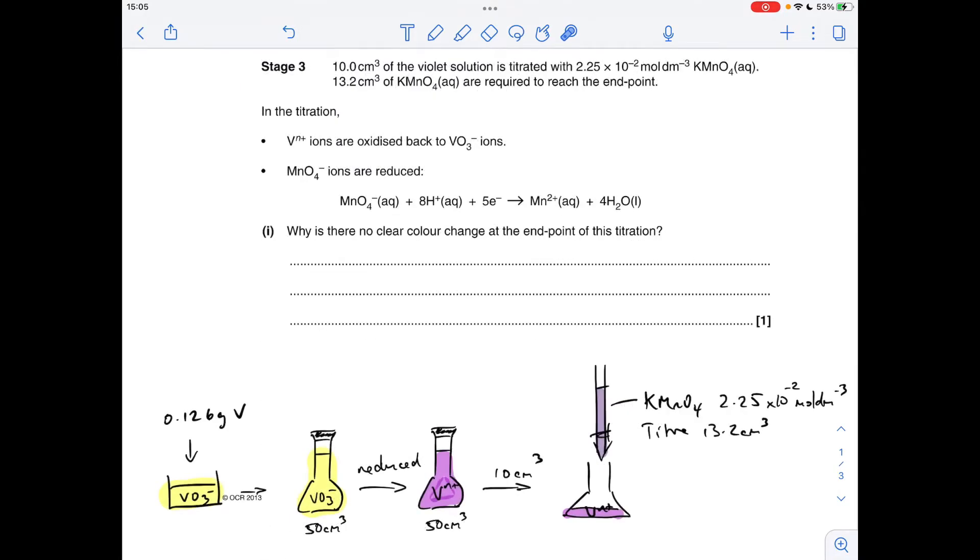So moving on to the calculation now, so you'll notice at the bottom here, I've drawn a sequence of pictures to try and illustrate what's happened. If you've watched a few of my videos, you'll know that I'm a big fan of doing this. So what's happening, they've taken 0.126 grams of vanadium, they've reacted it with acid and generated this yellow solution containing the VO₃⁻ ion.